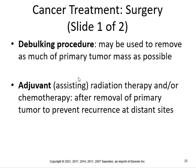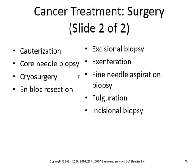For treatment, surgery may be used to remove as much of the primary tumor mass as possible — this is called the debulking procedure. Adjuvant therapy means radiation and chemotherapy after removal of the primary tumor to prevent recurrence. My dad had removal of his mandible followed by radiation and chemotherapy — he was cancer-free for two years, but it's hard to get every last bit, and it eventually came back.